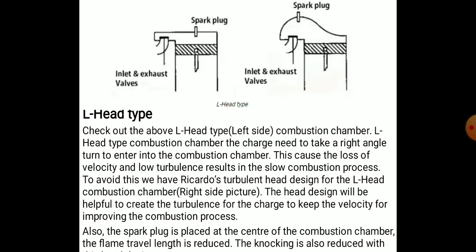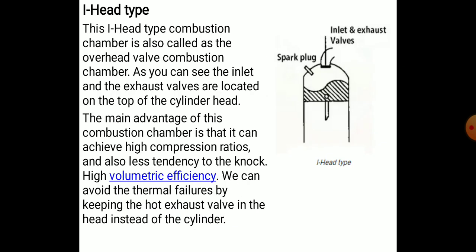In the L-headed type, the charge must take a right-angle turn to enter the combustion chamber, which causes loss of velocity and low turbulence, resulting in a slow combustion process. To avoid this, a turbulent head design is used for L-headed combustion chambers, which helps create turbulence and maintain charge velocity to improve the combustion process. The spark plug is placed at the center, reducing flame traverse length and knocking tendency.